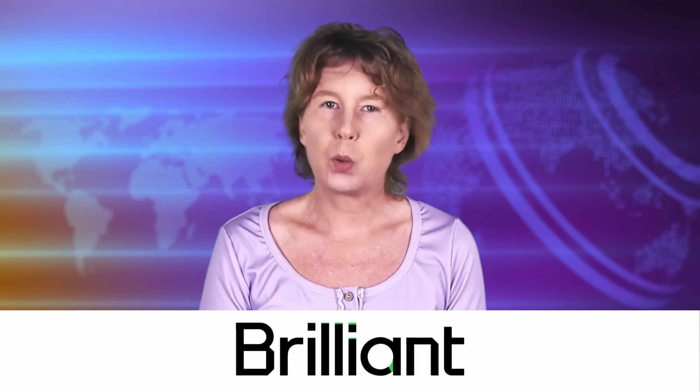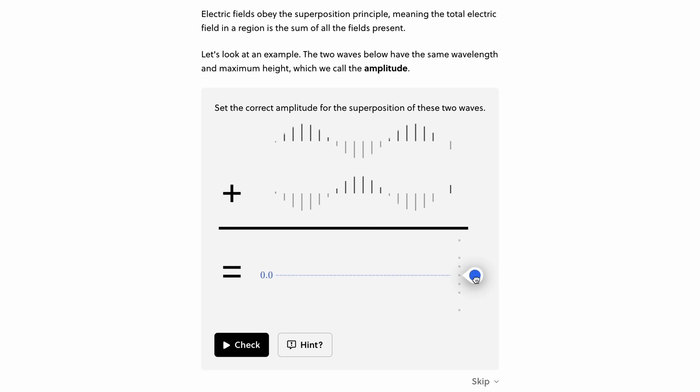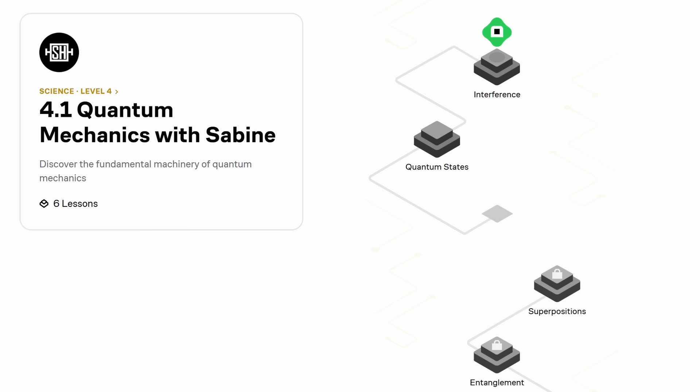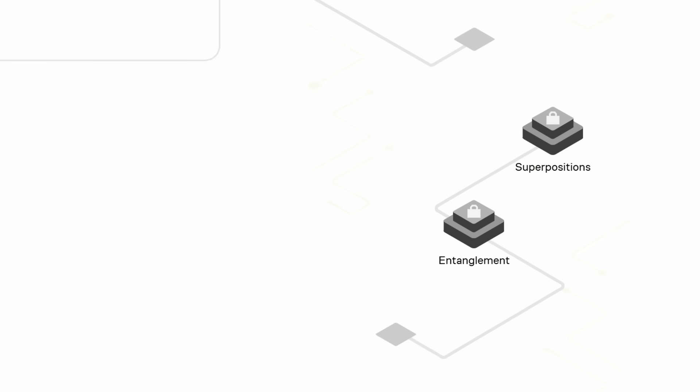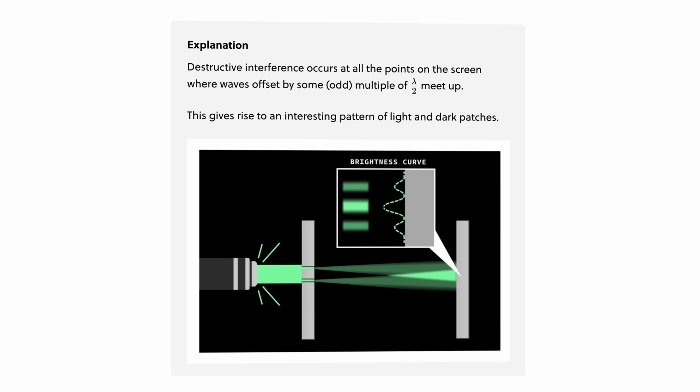I've been talking about quantum physics again — it's definitely my favorite topic. Did you know that I have a quantum mechanics course that you can take for free on Brilliant? My course will help you understand what a wave function is, and what the difference is between superpositions and entanglement. It also covers interference, the uncertainty principle, and Bell's theorem.